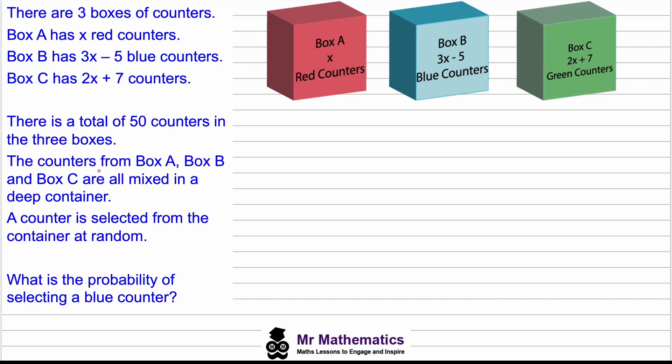The counters from box A, B and C are all mixed together in a deep container. A counter is selected at random. What is the probability of selecting a blue counter?